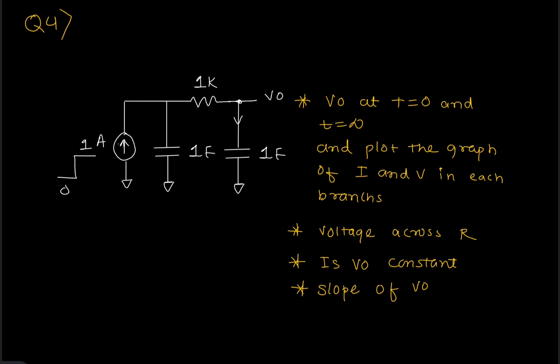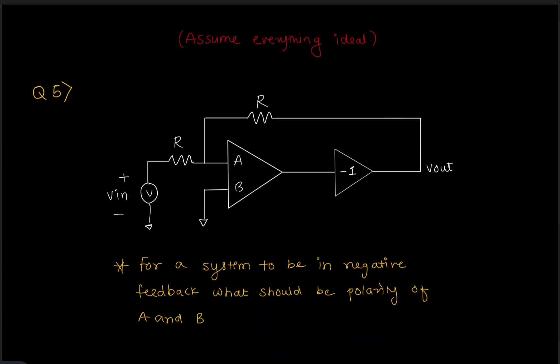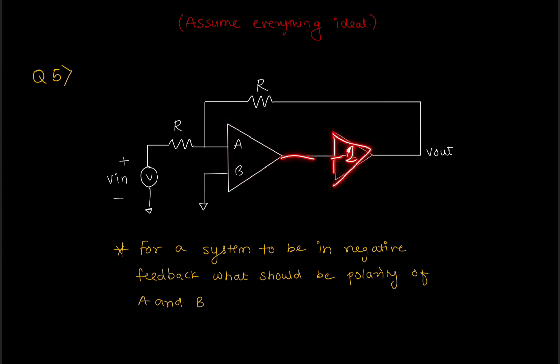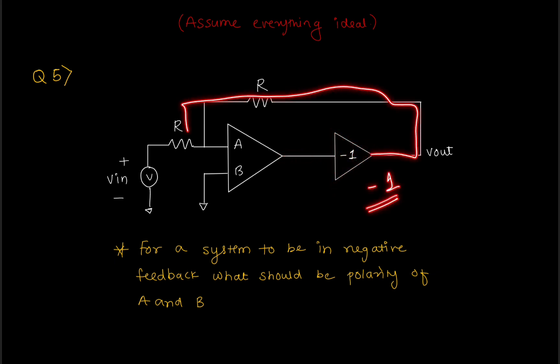The next question started with an ideal op-amp as a black box. They connected an amplifier like an op-amp with a negative analog buffer. They asked: for the system to be in negative feedback, what should be the polarity of A and B? Same as before, I told them the answer but they said, 'Go through the process and tell me how you got to that answer.'